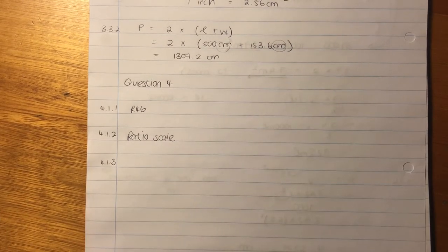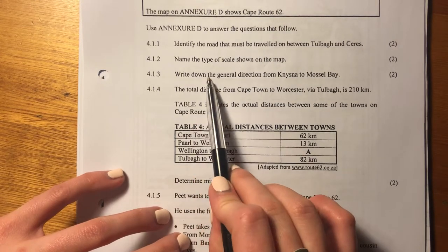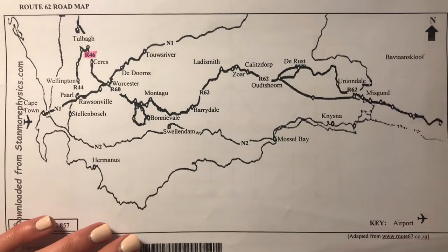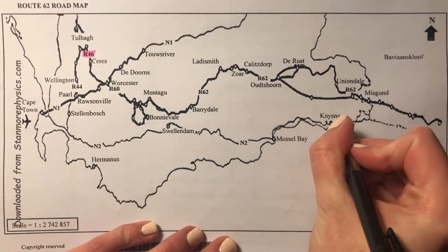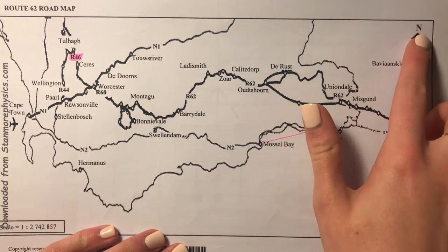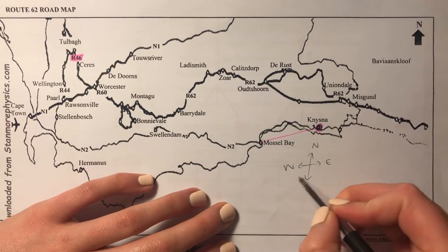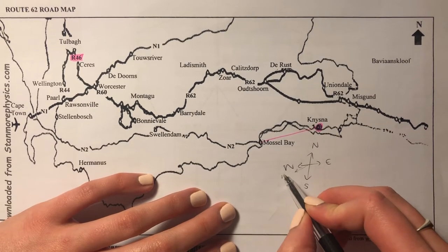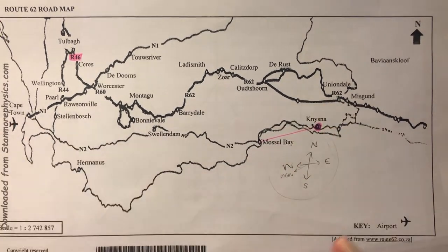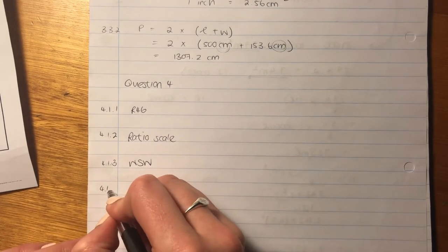Remember, these questions often help you understand the source you've been given, so don't get too stressed about understanding the map. The next question says write down the general direction from Nisner to Mosel Bay. We're standing at Nisner going to Mosel Bay — sometimes students think it's the other way around, but that's not the case. The most important thing is you figure out where north is. I'll use some color so you can see. Using 'never eat silk worms' to remember compass directions, we can see it's kind of west-southwest. So the answer is west-southwest — you can write it out or shorthand, you'll get the marks either way.